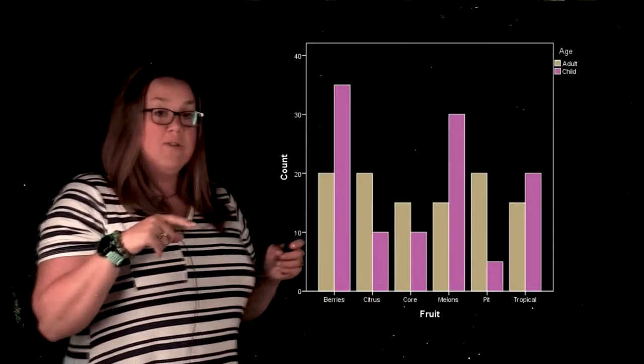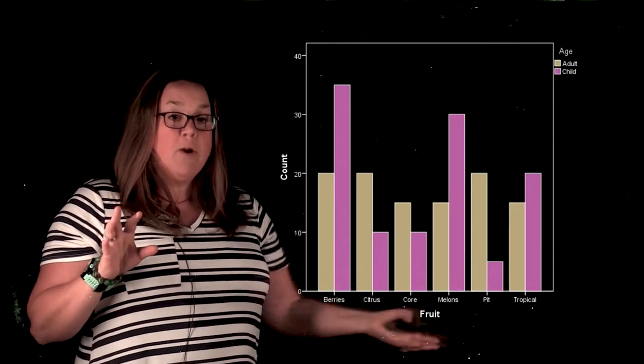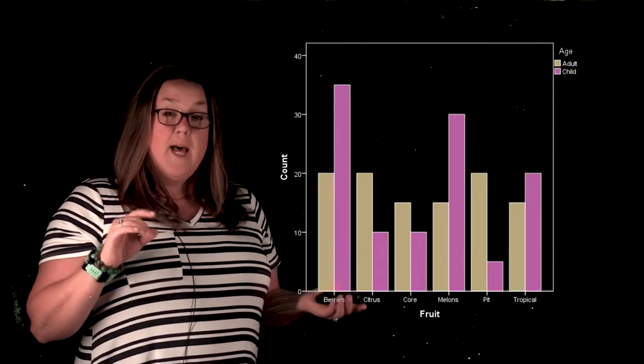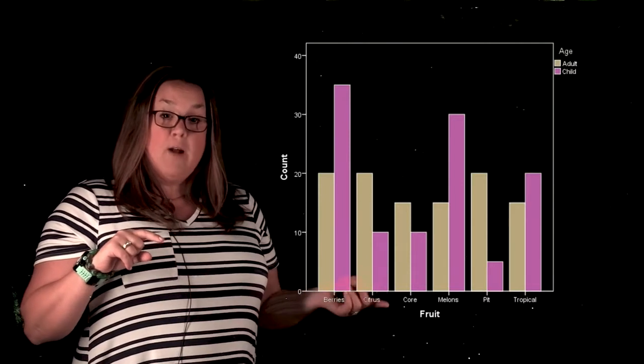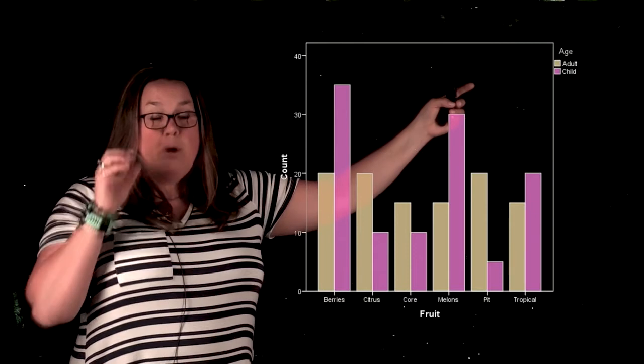A clustered bar graph means that it's not just one categorical variable, but it's two. This is an example of a clustered bar graph that we looked at in previous videos. You can see one of the categorical variables is represented on the horizontal or x-axis.